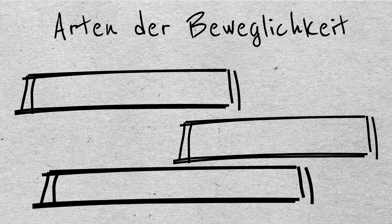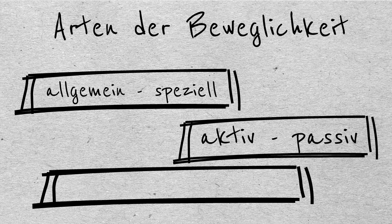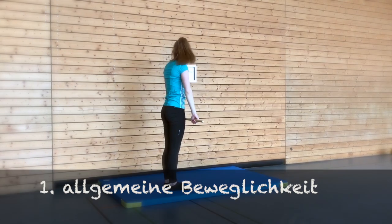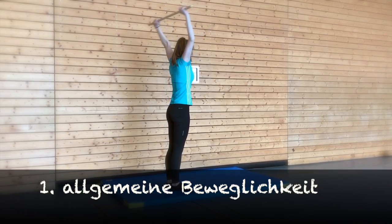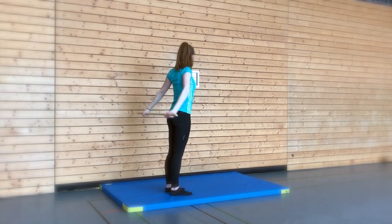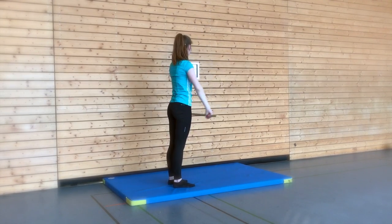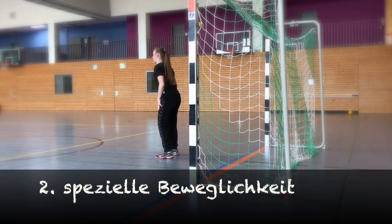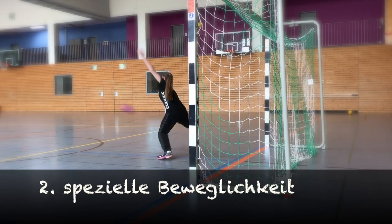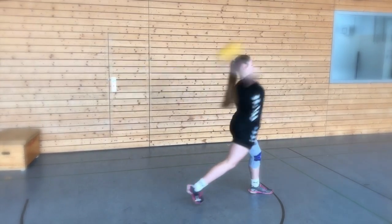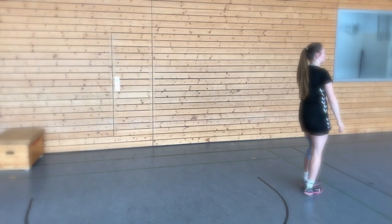Wir unterscheiden drei verschiedene Aspekte der Beweglichkeit: allgemein-speziell, aktiv-passiv, statisch-dynamisch. Die allgemeine Beweglichkeit betrifft die notwendigsten Gelenke bzw. Gelenksysteme und steht der speziellen Beweglichkeit gegenüber. Die spezielle Beweglichkeit betrifft sportart- bzw. bewegungsspezifisch bestimmte Gelenke, z.B. das Schultergelenk beim Kraulschwimmen oder beim Kugelstoßen, das Hüftgelenk beim Hürdenläufer usw.